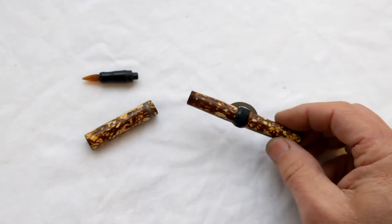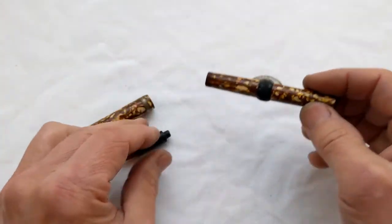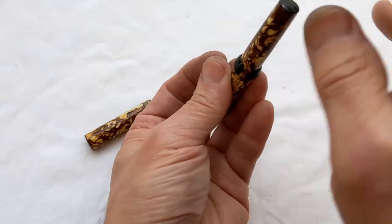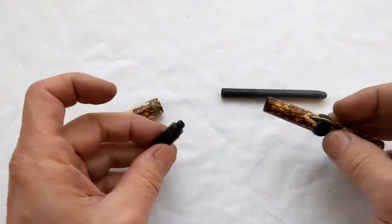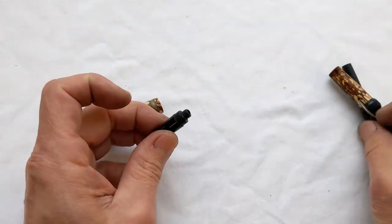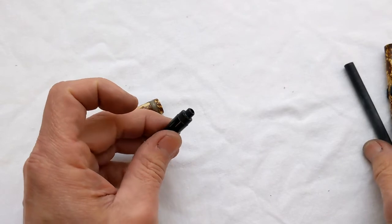Alright, so how do we deal with this? How do we deal with a number 19 sac that's correct for the barrel and a sac nipple that's too small? Well, it's really simple. All you do is you have to build this up slightly.